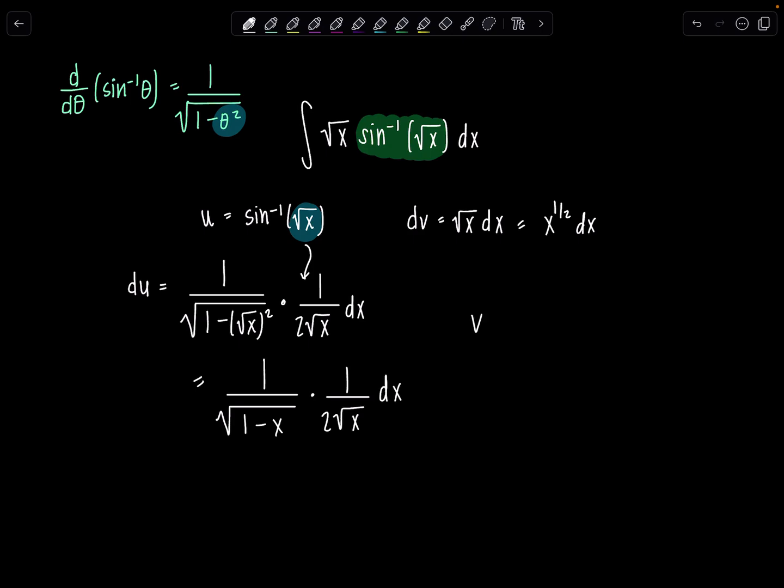Now we need to find v. So take the antiderivative, add 1 to the exponent, divide by the new exponent. Now we have 2 thirds x to the 3 halves.